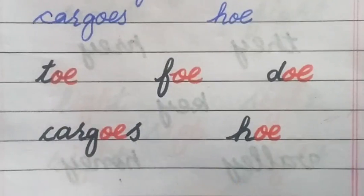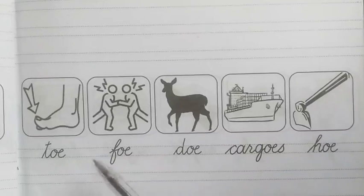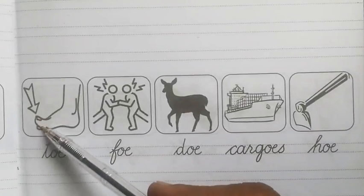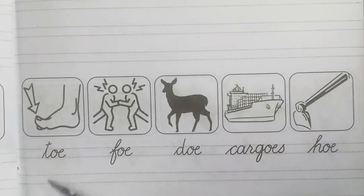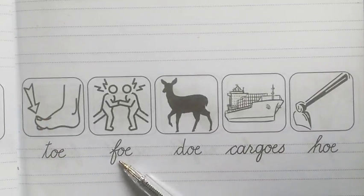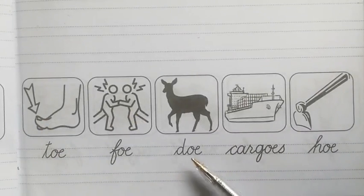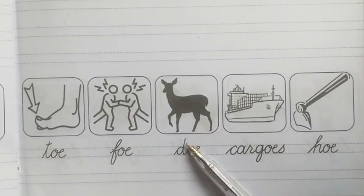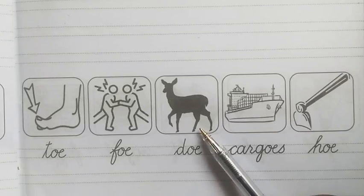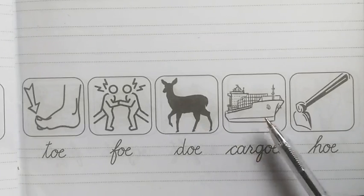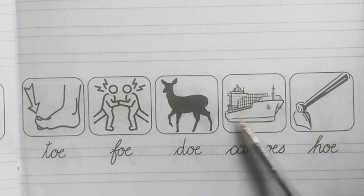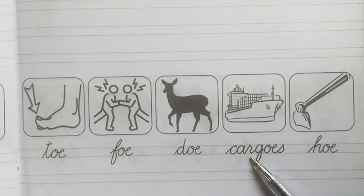So we will now move to Iqra join writing. This is T-O, this is P-O, this is F-O. The feminine of deer is doe. Cargoes — this is the ship that carries goods. And hoe — that is an instrument.